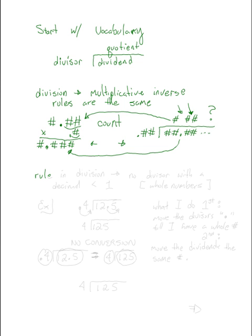So we have this rule in division that helps us avoid any confusion in counting. And the rule in division is no divisor with a decimal less than one. So basically what this means is we just want whole numbers. If you want to get real technical, it would be integers, but we're just going to talk about whole numbers.